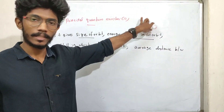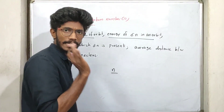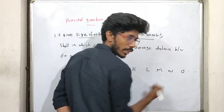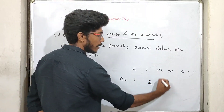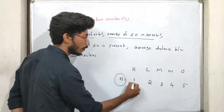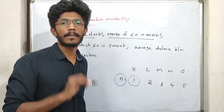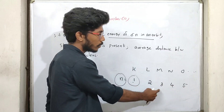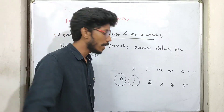The first one is the principal quantum number, denoted by n. It is also called the shell number. You can call it the shell number — whatever the shell is, you can tell what the shell number is. That is n.